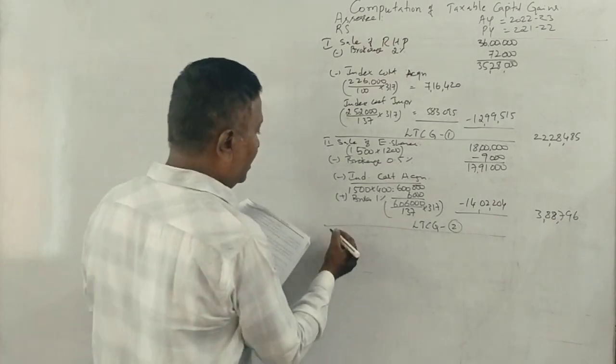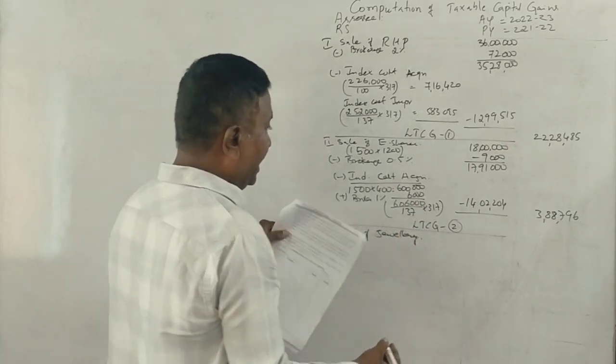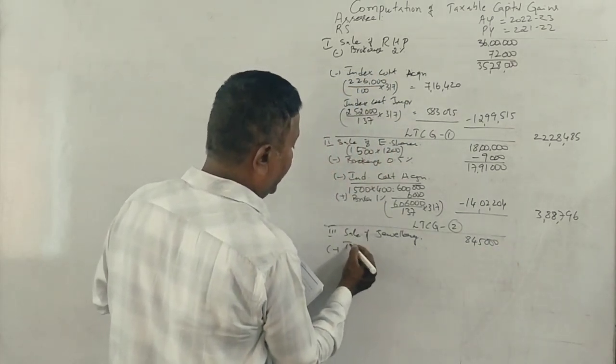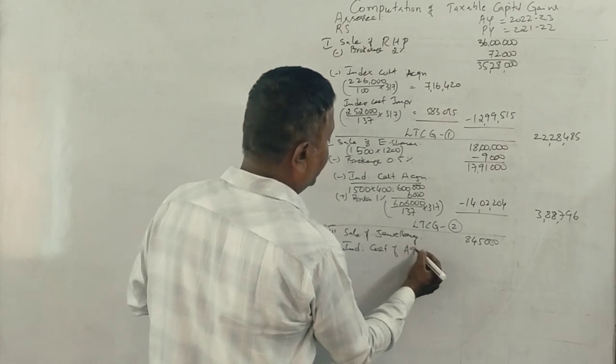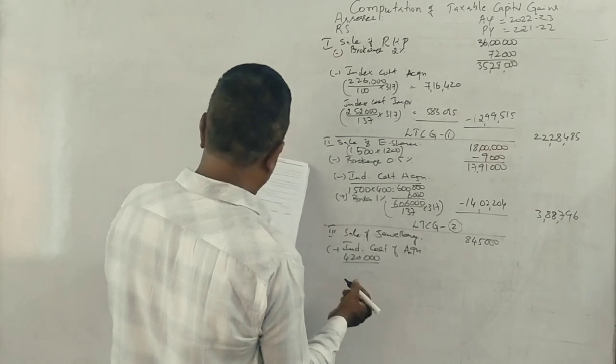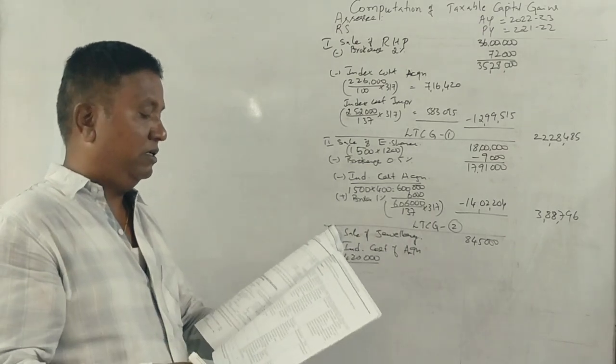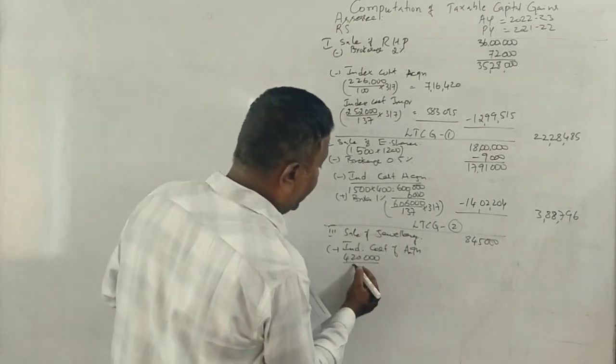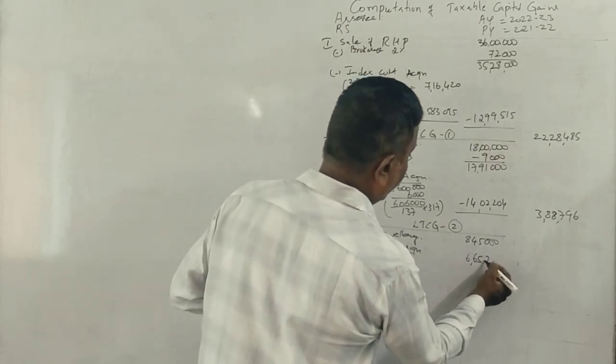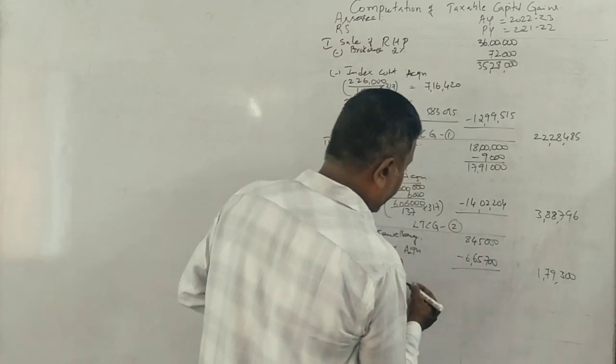Next, sale of jewelry: 8,50,000. The indexed cost of acquisition is 4,20,000 divided by 200 (the 2012 index from page 9) multiplied by 317, which equals approximately 6,65,700 or 7,11,000. This gives LTCG number 3 as 1,79,300.